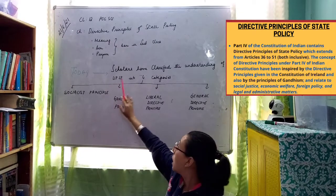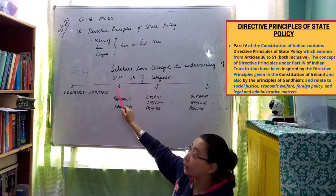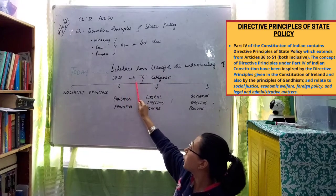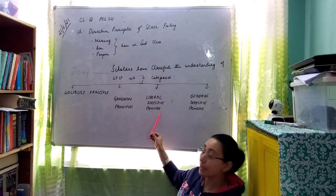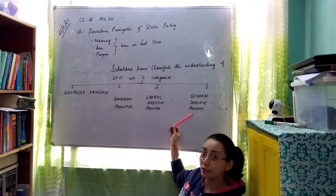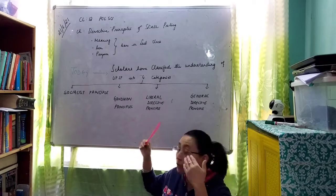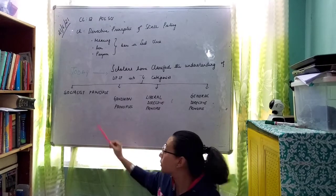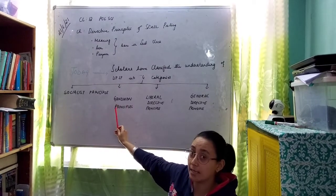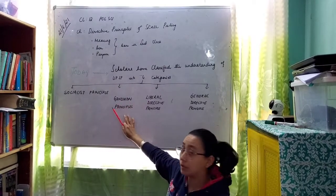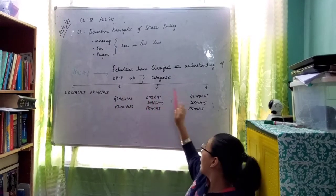Today we will focus on this topic. Scholars have classified the Directive Principles of State Policy into four categories: the Socialist Principle, the Gandhian Principle, the Liberal Directive Principle, and the General Directive Principle. On today's class, let's discuss what the Socialist Principle is, and in subsequent classes we shall discuss the Gandhian, Liberal, and General Directive Principles.